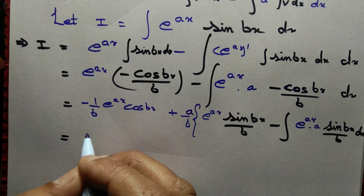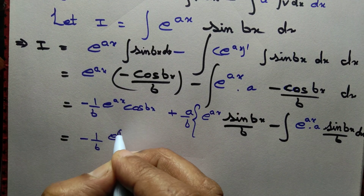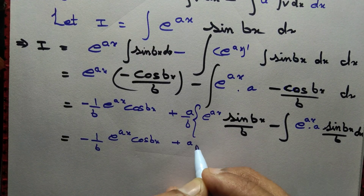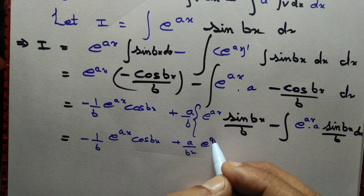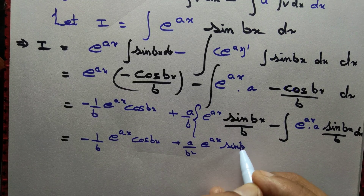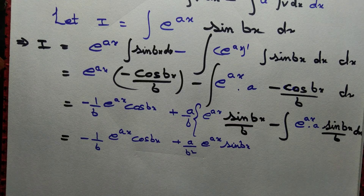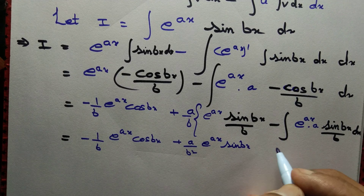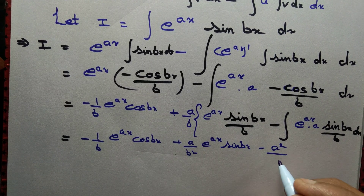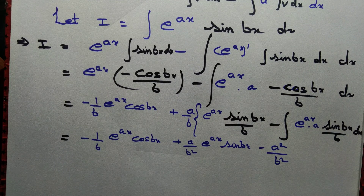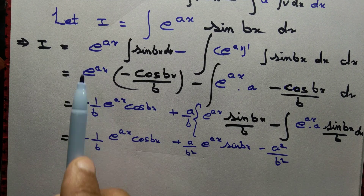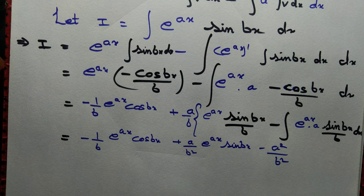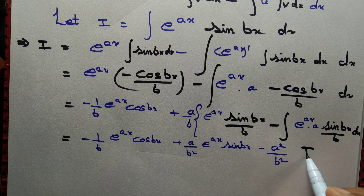This equals minus 1 by b, e to the power x into cos bx, plus a by b squared, e to the power x into sin bx. Multiplying numerator: a into a is a squared, b into b is b squared. The integral of e to the power x sin bx is exactly what we started with — e to the power x into sin bx — that is just i. So we can write it simply as i.